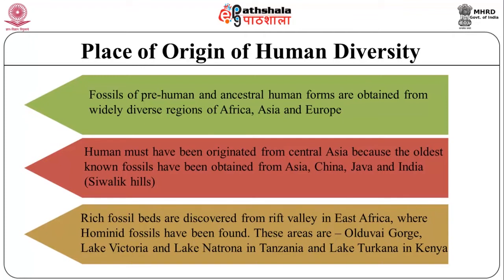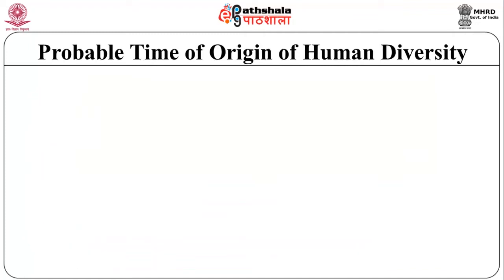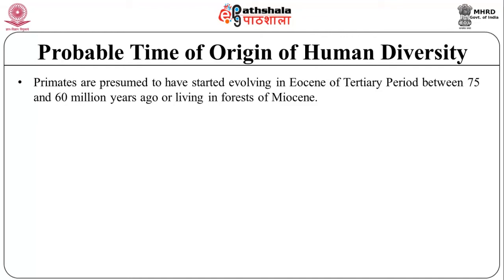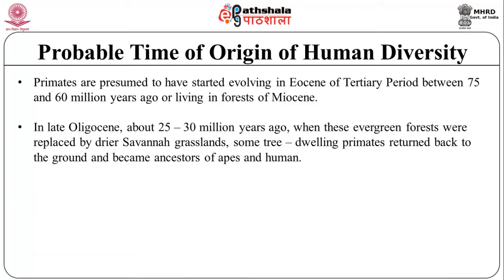The climatic conditions in Asia and nearby places were most conducive for human evolution. Rich fossil beds are also discovered from the Rift Valley in East Africa, where hominid fossils have been found — in areas like Olduvai Gorge, Lake Victoria, Lake Natron in Tanzania, and Lake Turkana in Kenya. Regarding the probable time of origin, primates are presumed to have started evolving in the Eocene of the Tertiary period, between 75 and 60 million years ago, living in forests.